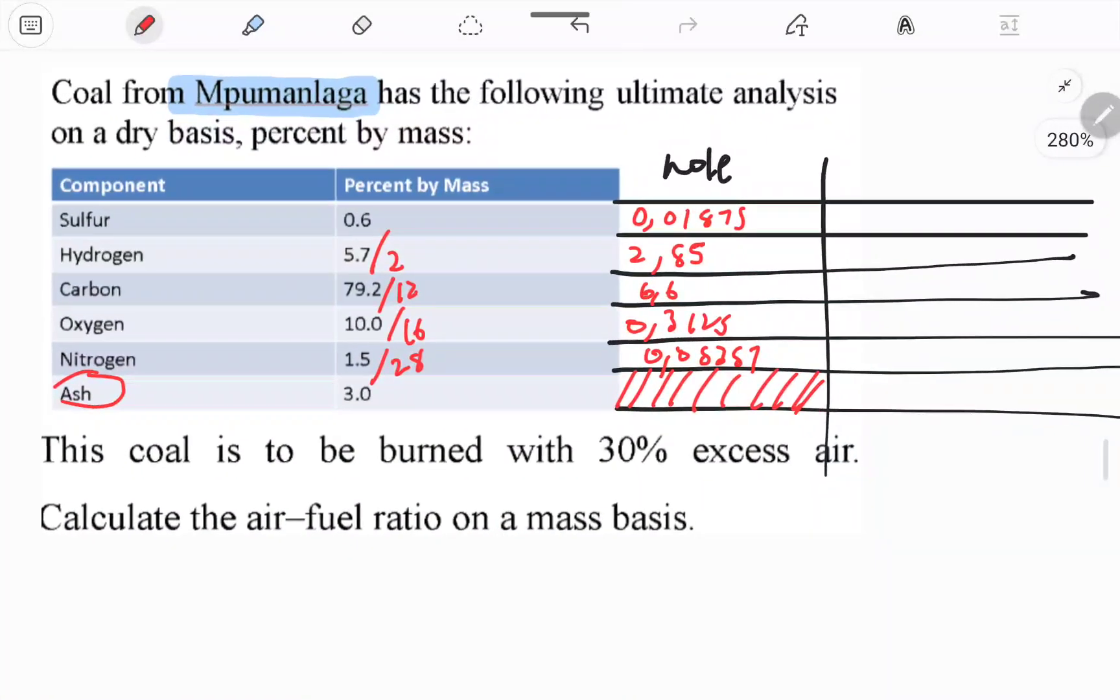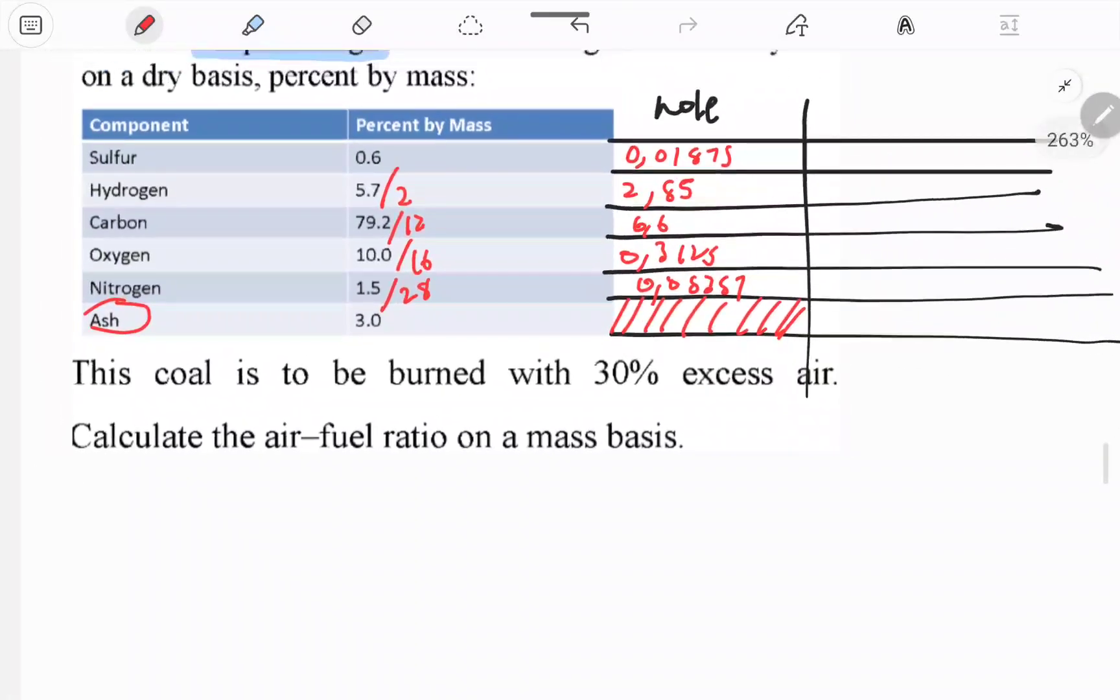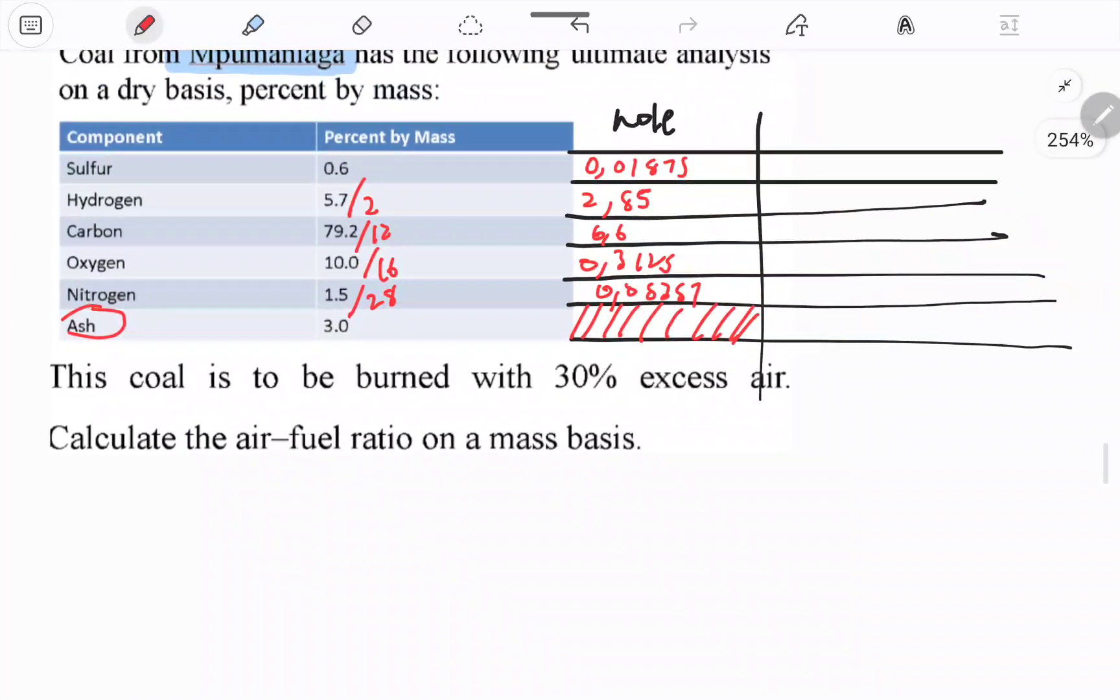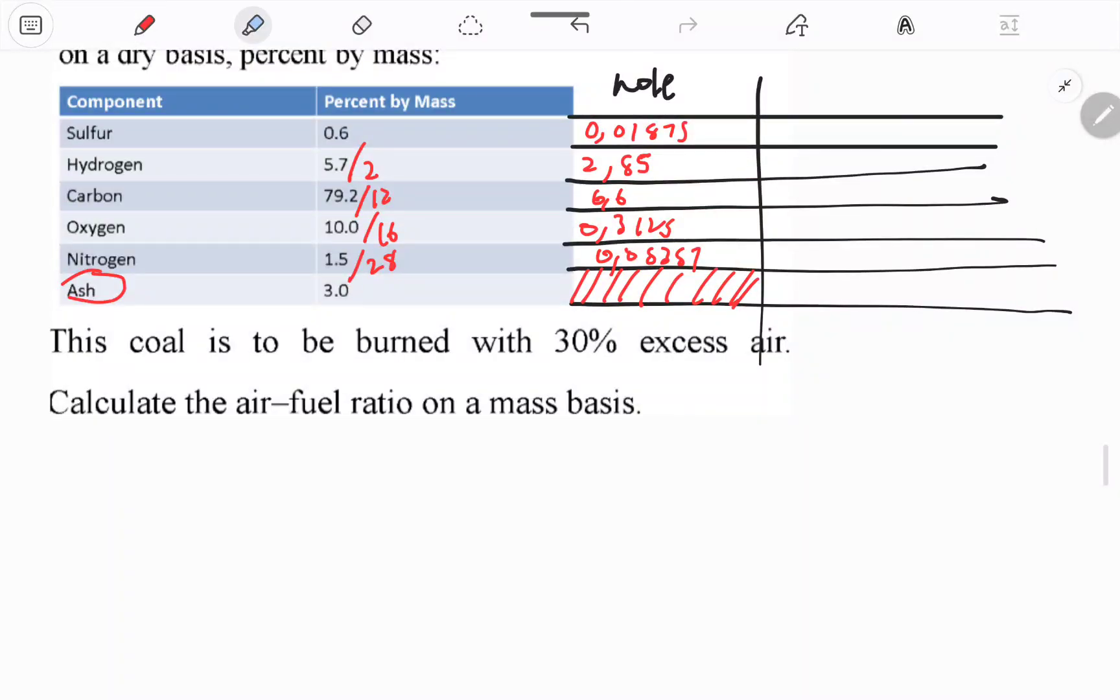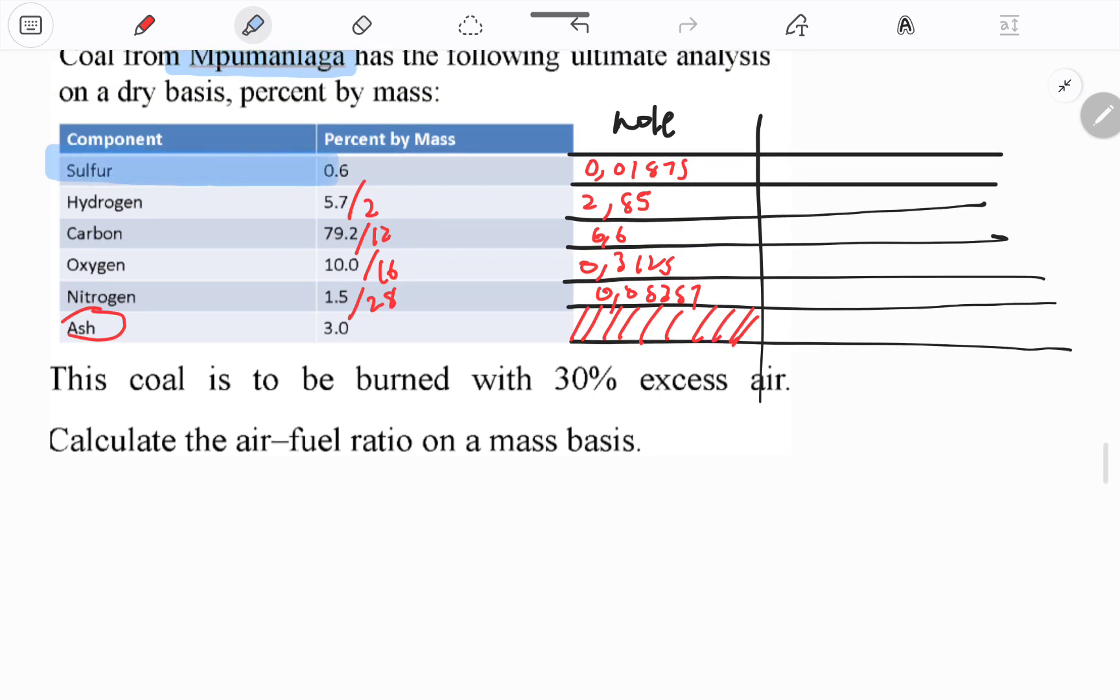That's cool. We now have moles for each component. Now we can look at what things here are combustible, so we can burn this one and this one, and you can make water with hydrogen.